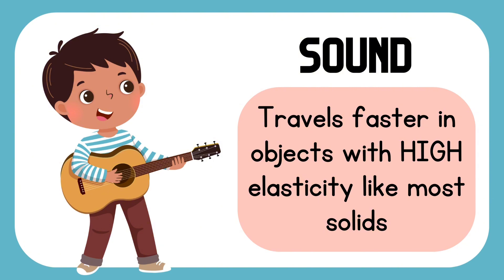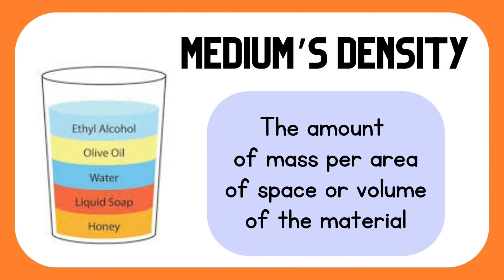Another factor that can affect the speed of sound is the medium's density. Density is the amount of mass per area of space or volume of a material. Here in the diagram, we can see that honey is denser than liquid soap, liquid soap is denser than water, and water is denser than olive oil.